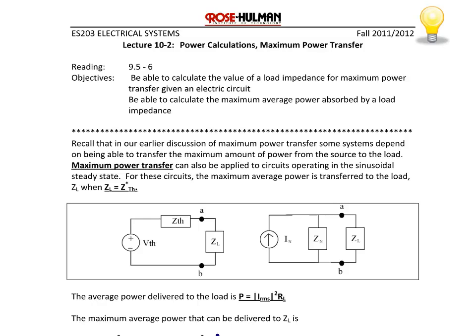By the conclusion of today's lecture, you should be able to calculate the value of a load impedance for maximum power transfer given an electric circuit. Note we've already done this in prior lectures, but the difference is today we're going to actually calculate the maximum average power absorbed by a load impedance, because now we have the tools to be able to do that.